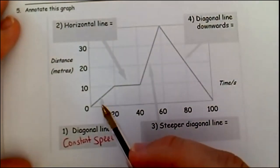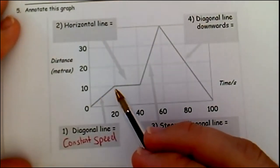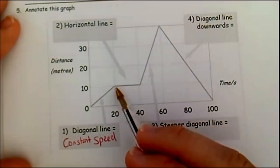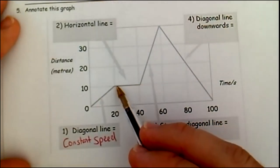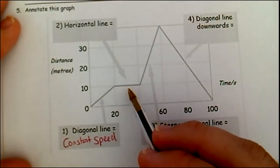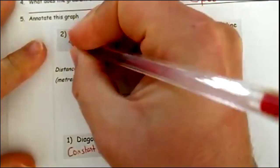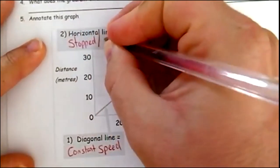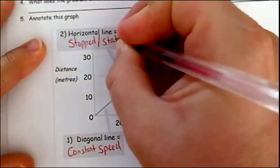At this point here, it flattens. The time is still going, but the distance isn't changing. If the distance isn't changing, that tells us they are stopped, or they are stationary. They are not moving.